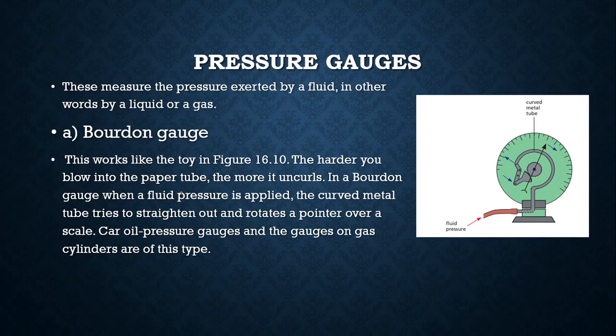Now we're going to move towards the types of pressure gauges. The first gauge or instrument that we have is the Bourdon gauge. This instrument basically works like a toy - the harder you blow into it, the more it unrolls. When you're placing some pressure through this pipe, it'll blow something or get some pressure to this gear, which will in turn make this straighten. When a pressure is applied, the curved tube tries to straighten and rotates a pointer over the scale.